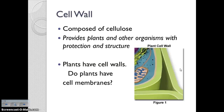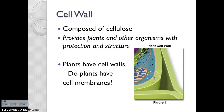Next up we have the cell wall, which is composed of cellulose in plant cells, and provides plants and other organisms with protection and structure. Plants have cell walls, and of course every cell has a cell membrane too — it's just that the cell wall is the outer layer. Bacteria cells and plant cells both have cell walls.